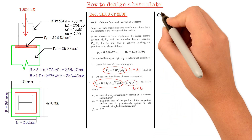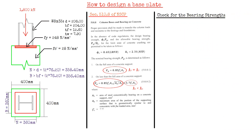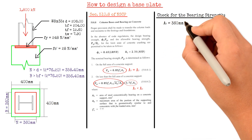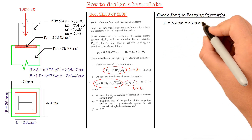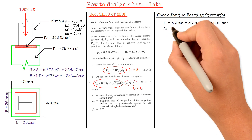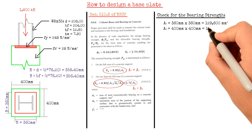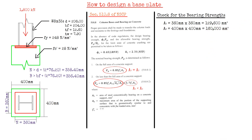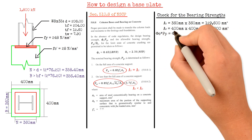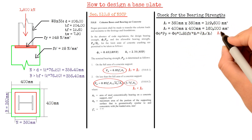After that, we will check the bearing strength of the concrete and compare it to the actual axial compression load. Area 1 equals 360 mm × 360 mm, which is 129,600 mm². Area 2 equals 400 mm × 400 mm, which is 160,000 mm². We will use the second equation since the area of the concrete pedestal is greater than the area of the base plate.